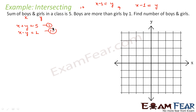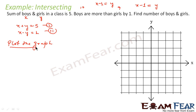Now we have two equations. Since in this section we are using the graphical method, the first step is to plot the graph. We will plot the graph and then check: if lines are intersecting, unique solution; if parallel, no solution; if coincident, infinite solutions.